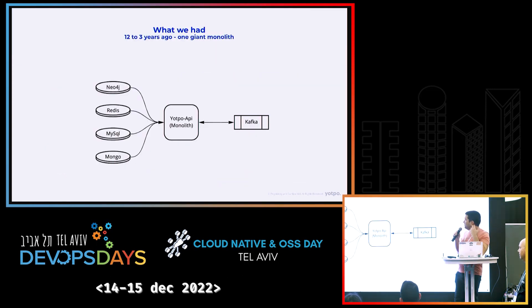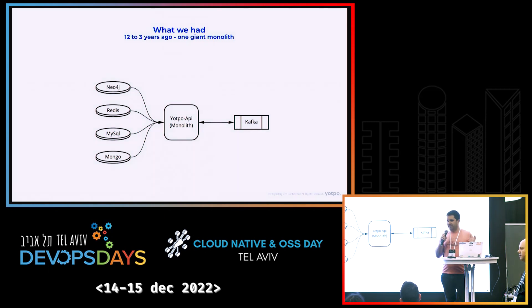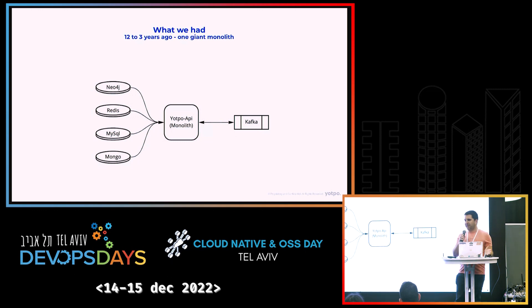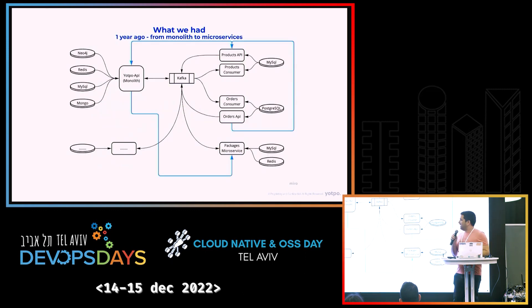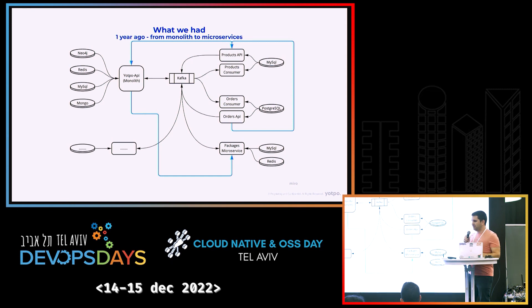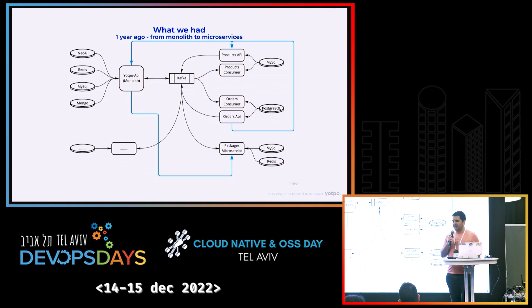In a nutshell, Yotpo started about 12 years ago. We have one big monolith for everything, and we ran into the same problems that everybody gets working on a monolith. Three years ago we decided we want to start using microservices. After a year, we had a system that became very, very complicated, with a lot of dependencies between services, and we got to a point where no one could actually run the entire system locally — not with Docker, not with anything else. We didn't have enough capacity.